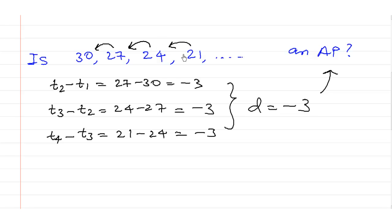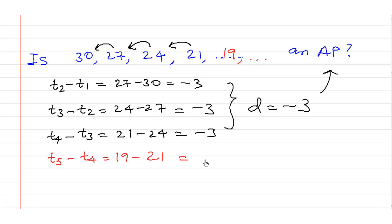But what if the next number were, say, 90? The fifth number minus the fourth number would be 19 minus 21, which is negative 2. So although we get negative 3 three times, we do not get negative 3 the fourth time. This would not be an arithmetic progression — in fact, it won't be a proper sequence. You need to get a common difference every single time; if the difference fails even once, it is not an AP.